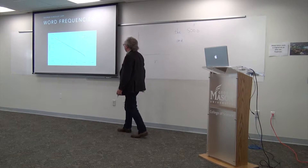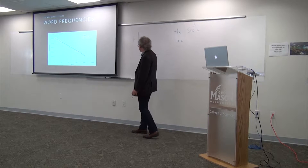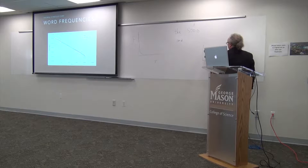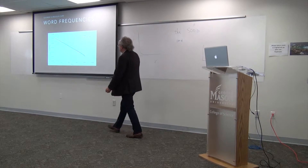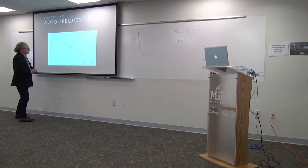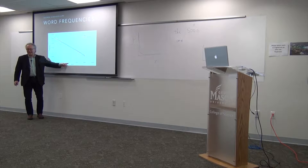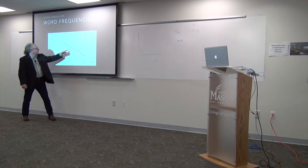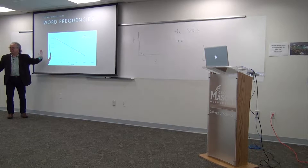Not only do we get a straight line in these logarithmic coordinates — we're plotting log frequency versus log rank — but in fact the slope is very close to minus one. Within these log-log plots, it's actually very easy to assess this. How many decades are plotted? There's roughly five orders of magnitude on one axis and five orders of magnitude on the other, so the slope is roughly minus one.